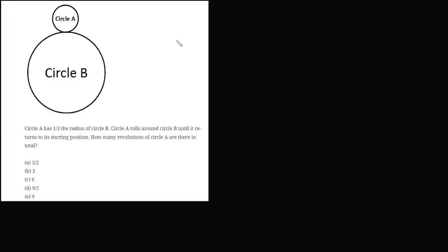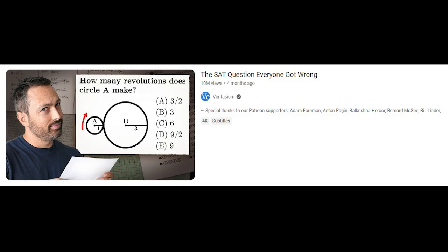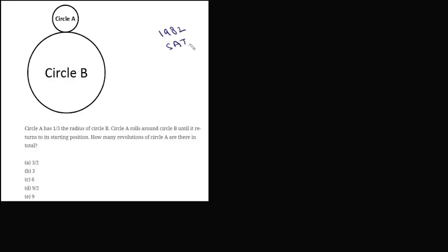Around 4 months ago, a very famous YouTube channel Veritasium made a video on a 1982 SAT problem. The problem was: you are given two circles, circle A and circle B. Circle A rolls around circle B until it returns to its starting position. How many revolutions of circle A are there in total?